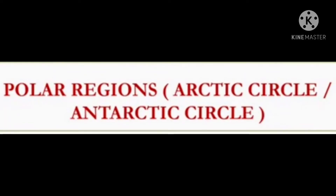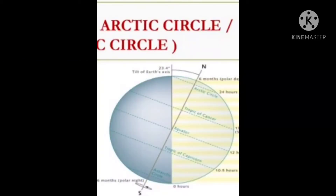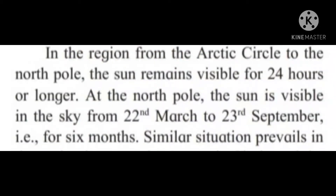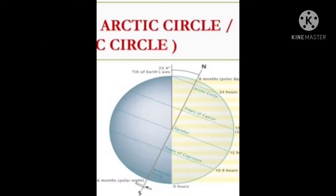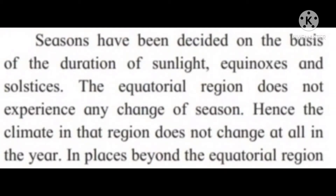Polar regions — Arctic Circle and Antarctic Circle: In the region from the Arctic Circle to the north pole, the sun remains visible for 24 hours or longer. At the north pole, the sun is visible in the sky from 22nd March to 23rd September, that is for 6 months. A similar situation prevails in the region between the Antarctic Circle and the south pole in the period from 23rd September to 21st March.